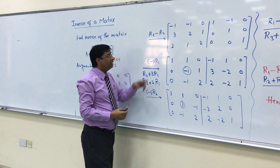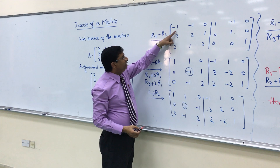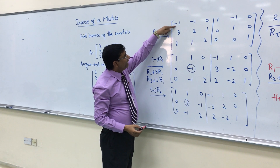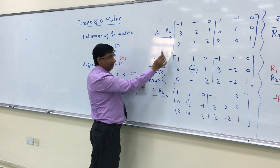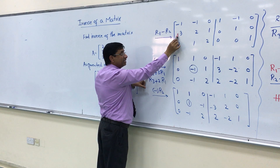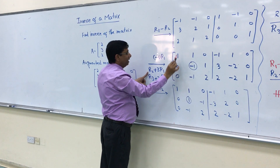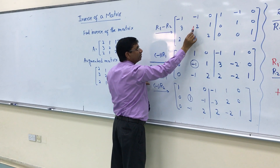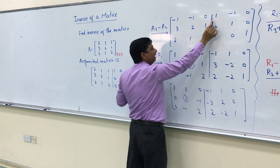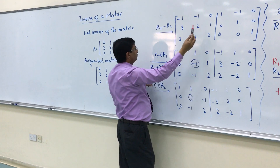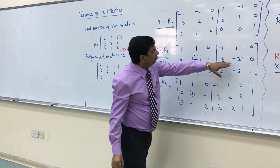Secondly, we need 0s below this 1. So we apply the next operation: multiply R1 by 3 and add to R2, because negative 3 plus 3 gives 0. We write R2 plus 3 R1. Multiplying R1 by 3: negative 3 plus 3 gives 0; negative 3 plus 2 gives negative 1. We apply the operation on both sides and obtain the new row.